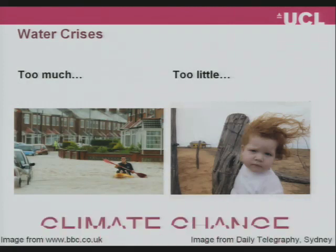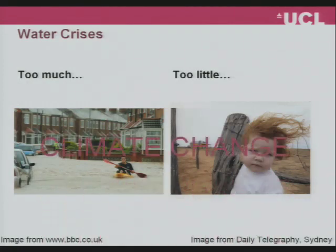There is the problem of people living in rapidly urbanising cities not having access to clean drinking water, and also increasing water stress and scarcity in many cities as rainfall becomes more erratic and droughts become more prolonged and intense. One thing we know about climate change is that it's going to make these problems of both too much and too little water even more difficult to manage.